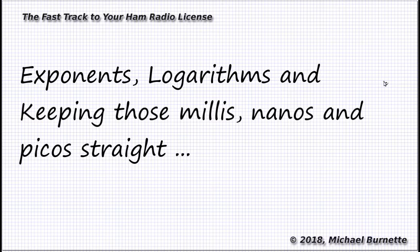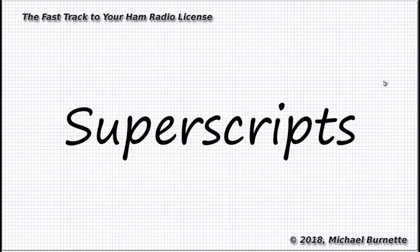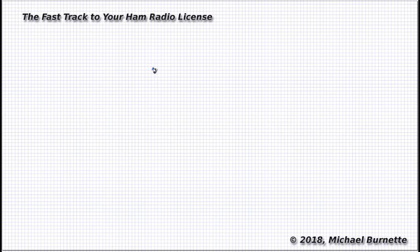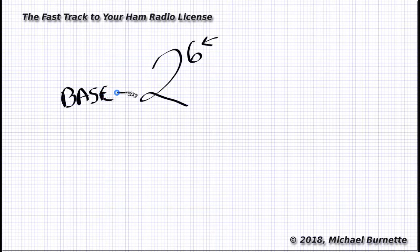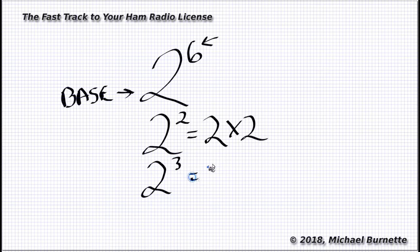Exponents are those little numbers, the superscripts, that sometimes appear above and just to the right of some value, whether that value is a number or a letter. An exponent says, raise this number to the power indicated by the superscript. The number being raised is called the base, so 2 with a little 2 next to it is 2 raised to the second power, also known as 2 squared, or 2 times 2. 2 with a little 3 by it is 2 raised to the third power, or 2 cubed, or 2 times 2 times 2.